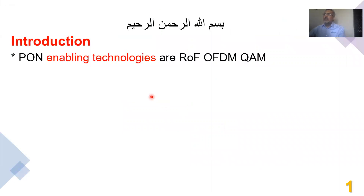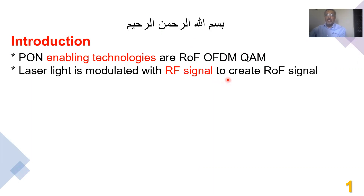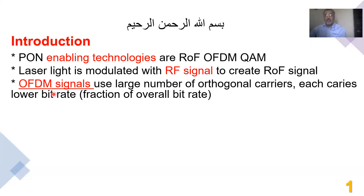What we are going to talk about today is the enabling technology for passive optical networks — mainly radio over fiber, orthogonal frequency division multiplexing, and quadrature amplitude modulation. To create radio over fiber signals, we typically take a laser light and modulate it with an RF signal. In terms of OFDM signals, we have a large number of subcarriers, each carrying a fraction of the overall bitrate.